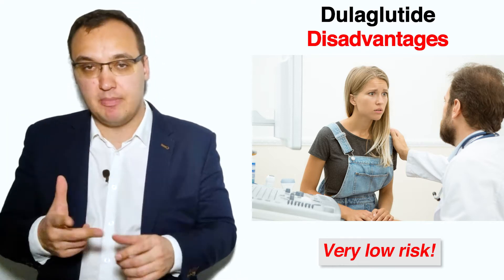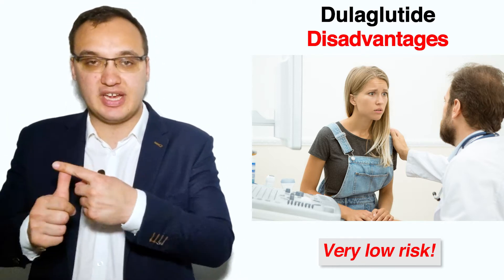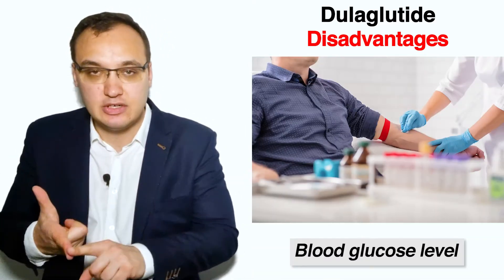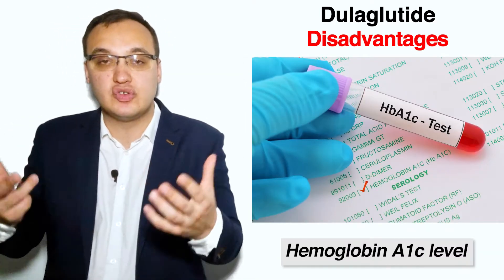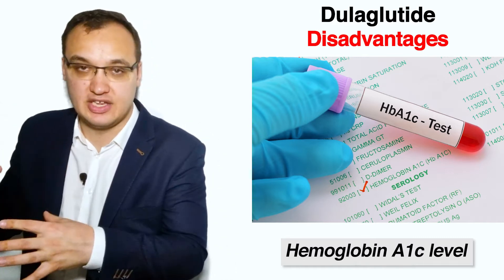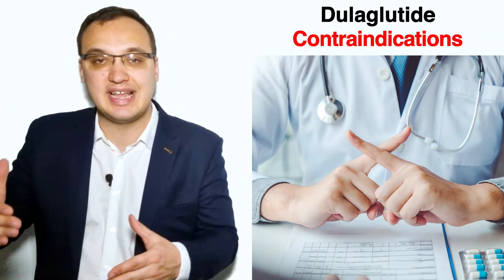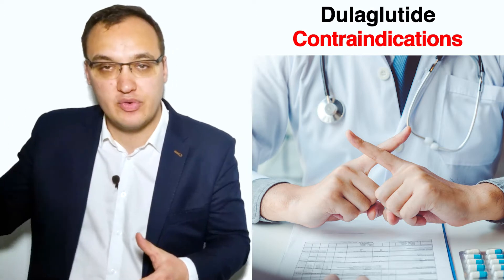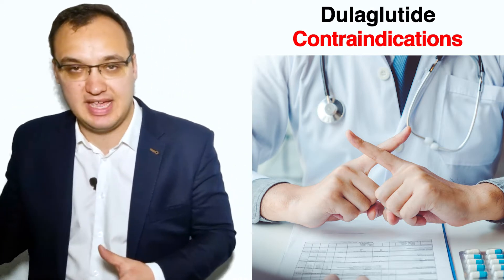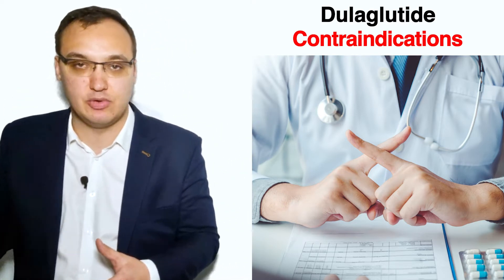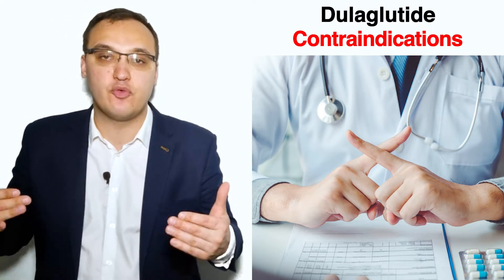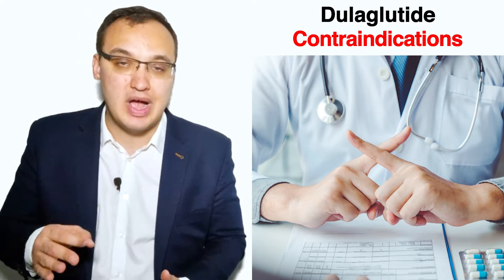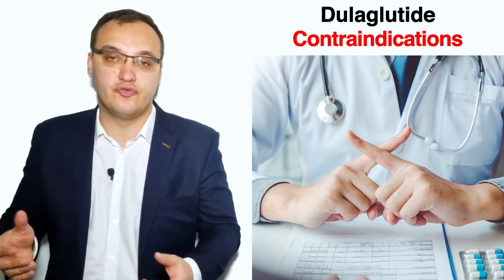After checking the three parameters — weight, blood glucose levels, and hemoglobin A1c — we also need to exclude some contraindications before starting the medication. Contraindications are conditions that are contrary to or against these medications, making them inadvisable. In simple terms, some things have to be ruled out before starting the medication; otherwise, it is harmful to the patient.